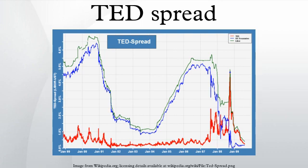The size of the spread is usually denominated in basis points. For example, if the T-Bill rate is 5.10% and ED trades at 5.50%, the TED spread is 40 basis points.